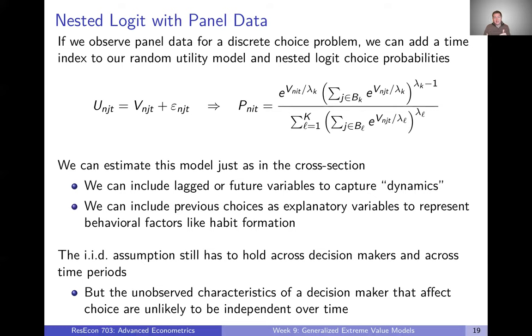But of course, the unobserved characteristics of a decision maker that are going to affect their choices, those are unlikely to be independent over time. If you have a preference for driving to work today, you're going to have a preference for driving to work tomorrow. But the nested logit model with panel data is going to assume that each one of those decisions that you make every day, that those are independent of one another. And that's not likely to hold. And so unless you think you're in a setting where that IID over decision makers and time periods is going to hold, you might want to use an even more flexible model like the mixed logit model that we'll talk about next week.